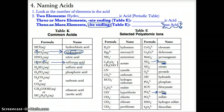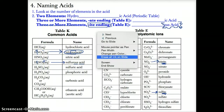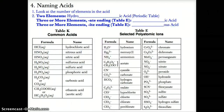To summarize: if you have only two elements in the form HX, you name it hydro-blank-ic acid, where the blank is the root name of X. For example, HCl is hydrochloric acid, HF is hydrofluoric acid, and so on.